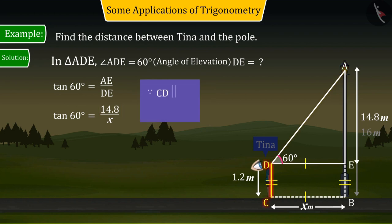Since CD is parallel and equal to BE and BC is parallel and equal to ED, and we know from the trigonometric ratio table of specific angles that the value of tan 60 degrees is square root 3.